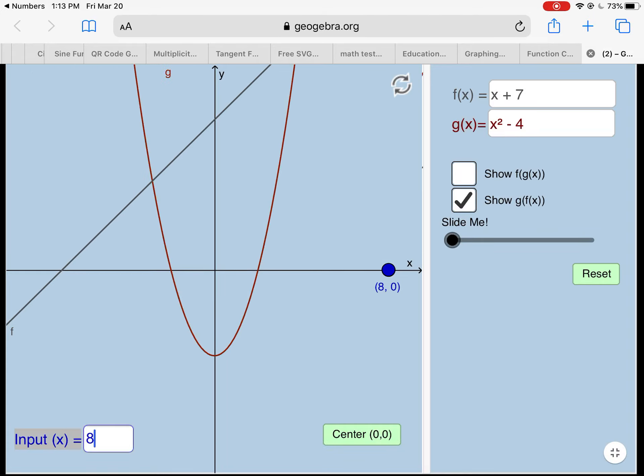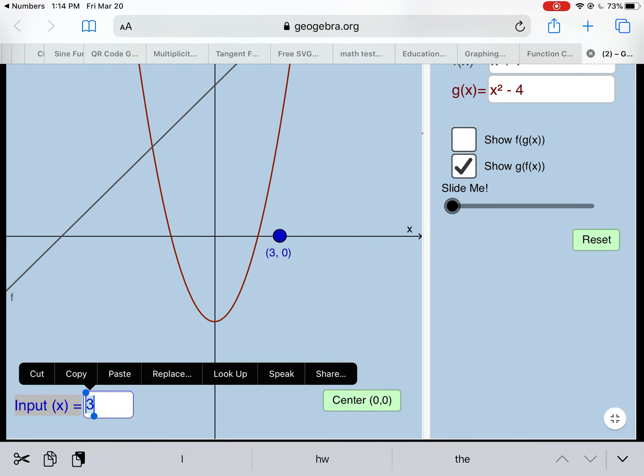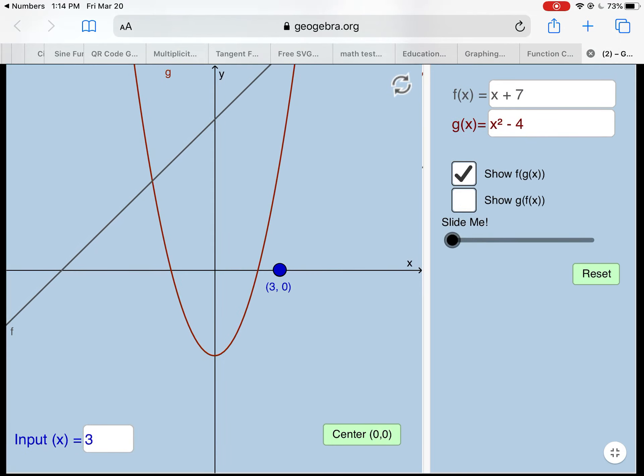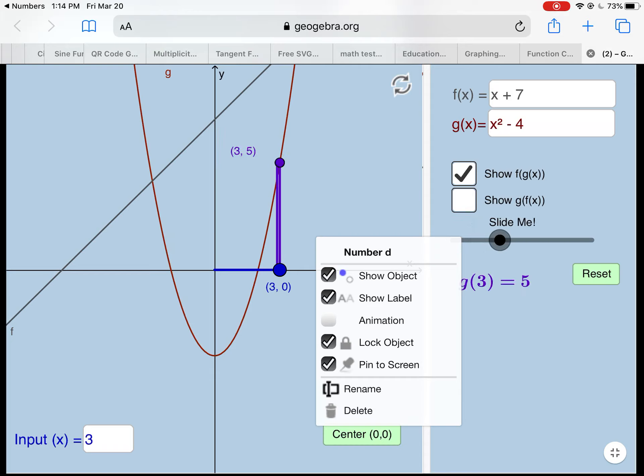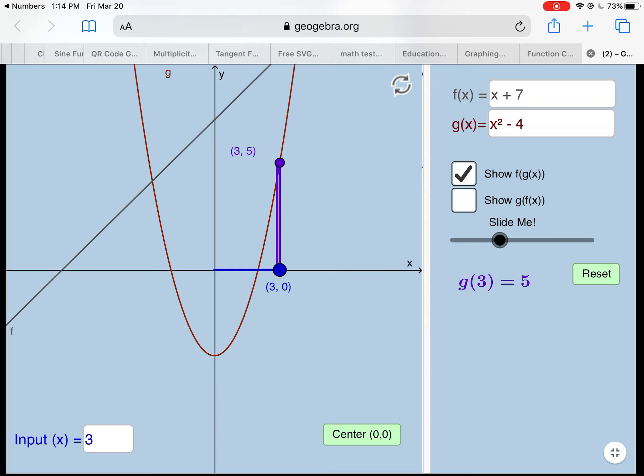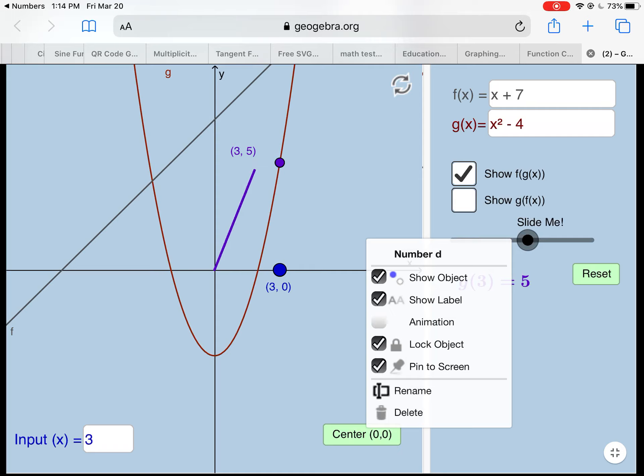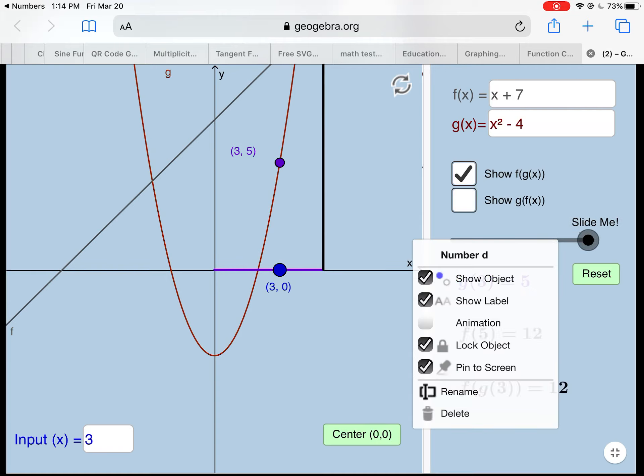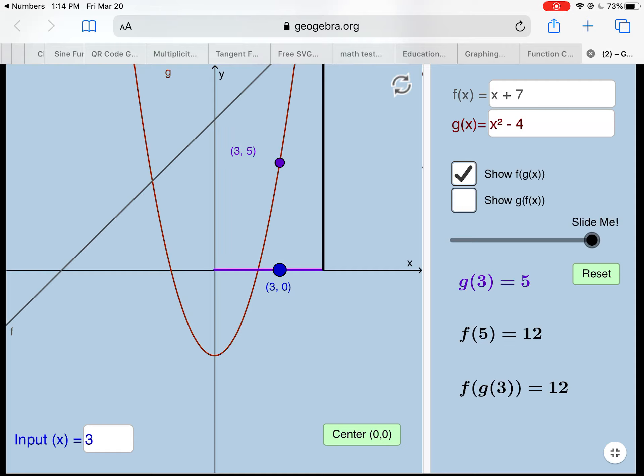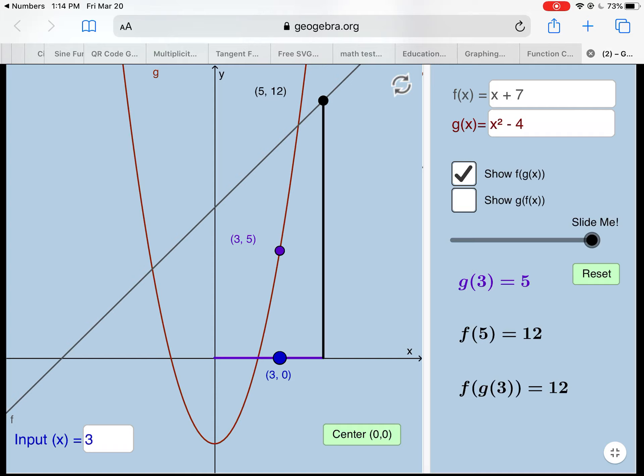And then notice, down at the bottom left of this applet, I have an input value for x. We're going to make it a 3, because that is the value that we're starting with. We're trying to find—let's click on the box that says f of g of x. So if x is 3 to start, we're finding f of g of 3. So this would show, this is finding g of 3. g of 3 is equal to 5. That 5 is a y value right now, or a range value. And we're going to take that and treat it as an x value now to plug into the function f. Now f of 5 equals 12. Kind of hard to see, but there it is up there. And we can now say that f of g of 3 is equal to 12.